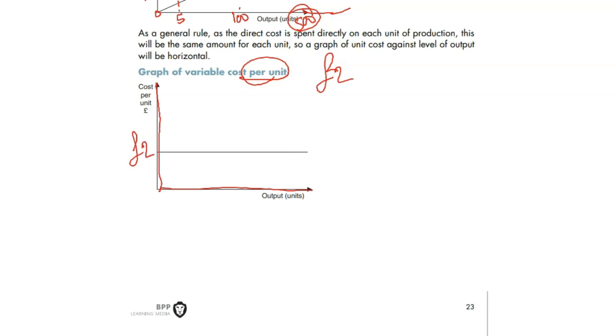The variable cost per unit is unchanged, and that is 2 pounds. Cost of one item, cost of one calculator could be 2 pounds. But the more you produce, the more it costs you. That is the variable cost total. The variable cost per unit looks like fixed cost total.